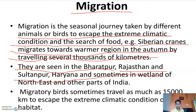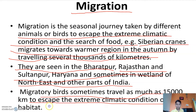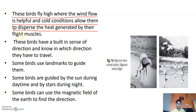Siberian cranes migrate toward warmer regions in autumn, traveling several thousands of kilometers. They are seen in Bharatpur, Rajasthan and Sultanpur, Haryana, and sometimes in the wetlands of northeast India and other parts of India. Migratory birds sometimes travel as much as 15,000 kilometers to escape extremely cold climatic conditions to reach their habitat.